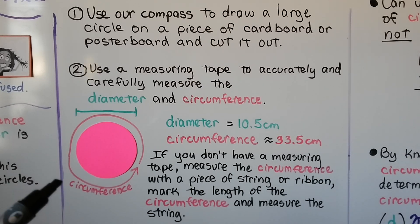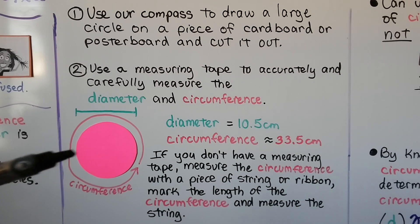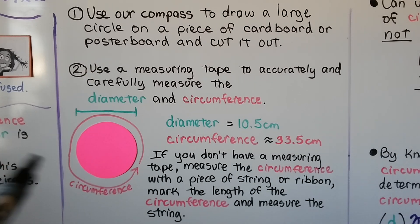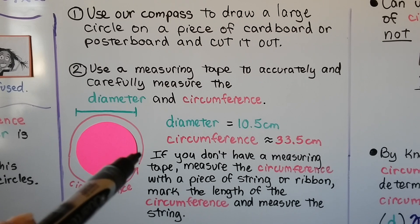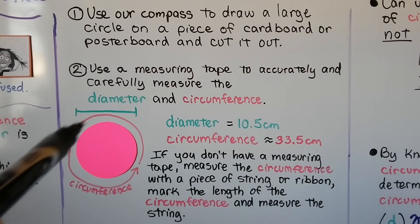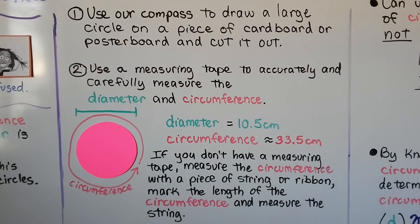Next, we use a measuring tape to accurately measure the diameter — the distance from side to side — and the circumference all the way around. If you don't have a measuring tape, you can measure the circumference with a piece of string or ribbon. Go carefully around the edge one time, mark the string, then measure the string on a ruler.